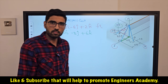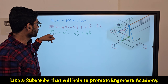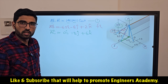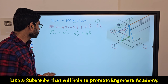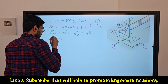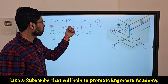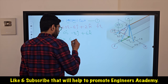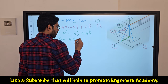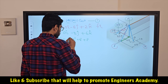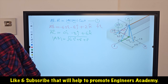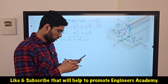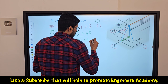Now that we have AB and AC vectors, we need their magnitudes. The magnitude of AB equals the square root of 6.5² + 8² + 2², which gives us 10.5 feet. This tells us the direct distance between points A and B is 10.5 feet.